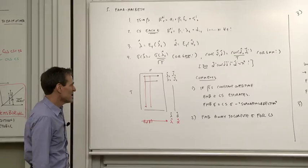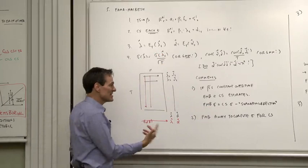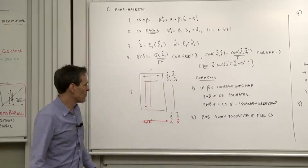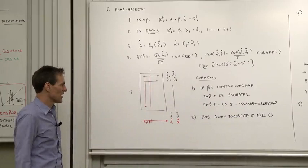The Fama-Macbeth standard errors, the sigma over root T, are exactly the same as the cross-sectional standard errors, except they're missing the Shanken correction for the fact that the betas are generated regressors. And therefore, there was an argument about how big is that correction? Is that important or not?